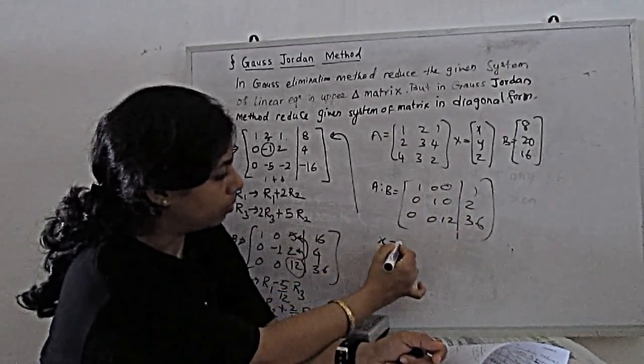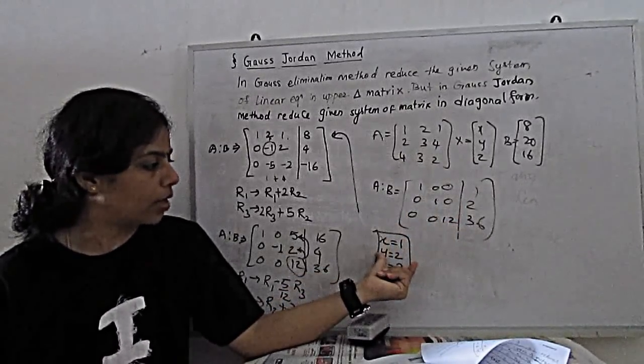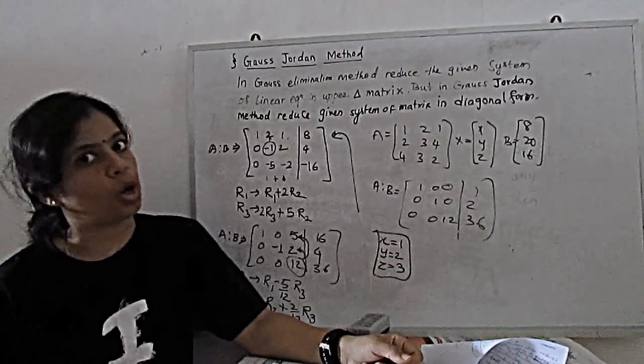So with the help of this matrix, we can find the result of our given solution. X equal to 1, Y equal to 2 and Z equal to 3. So this is the Gauss-Jordan method.